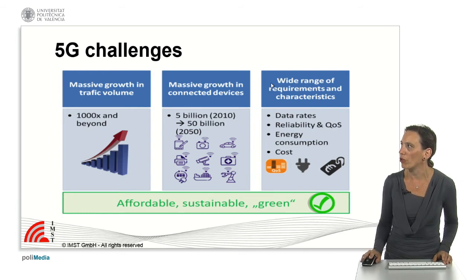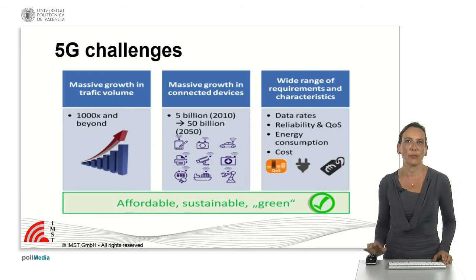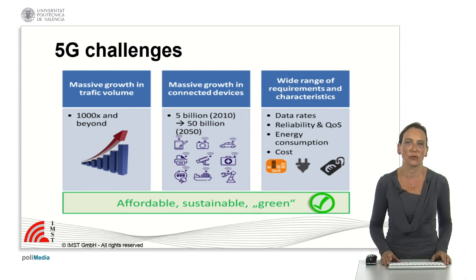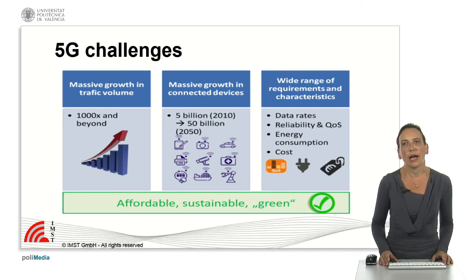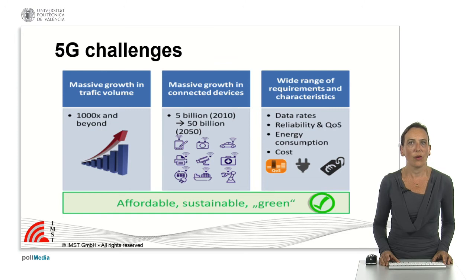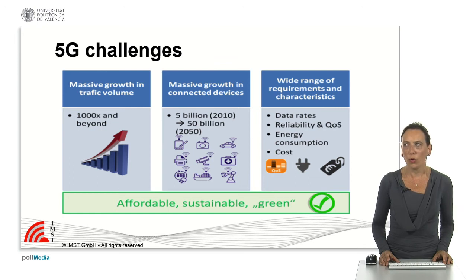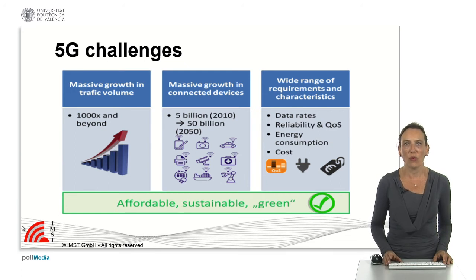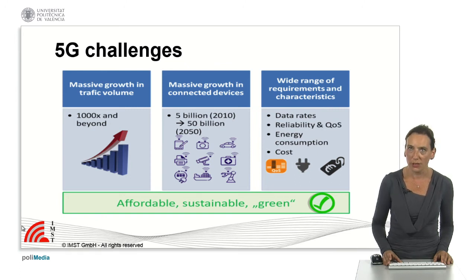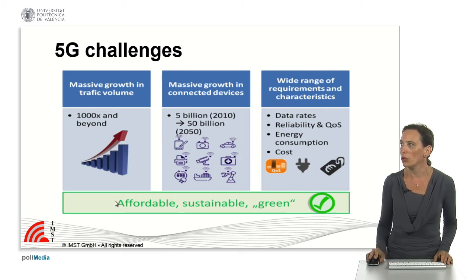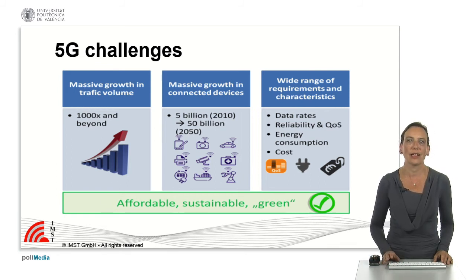We will also have a wide range of requirements regarding data rates — from very low data rates from sensing networks, to very high data rates from high-definition television and multimedia. We will also need high reliability and very high quality of service. Additionally, there is the problem of energy consumption: networks are already consuming a very important part of the world's energy production, and we want to reduce this due to cost and because we want to move towards affordable, sustainable, and green communications.